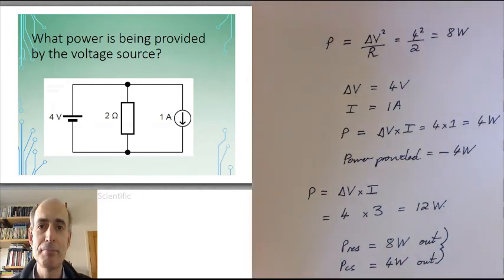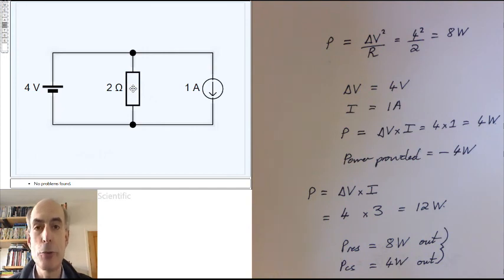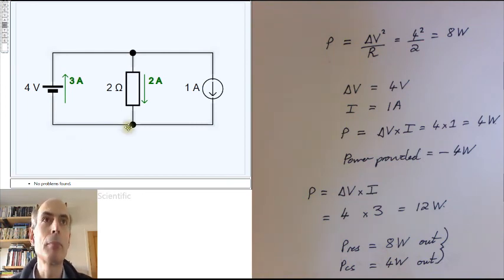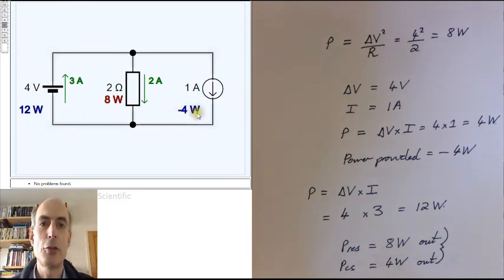We can check this on the simulator. For most components, a control-click shows you the current. We can confirm that the current through our 2-ohm resistor is 2 amps, and the current through the 4-volt voltage source is 3 amps. A shift-click will tell you about the power: the 2-ohm resistor is dissipating 8 watts, the 4-volt voltage source is contributing 12 watts, and the 1-amp current source is contributing minus 4 watts — just as we would expect.